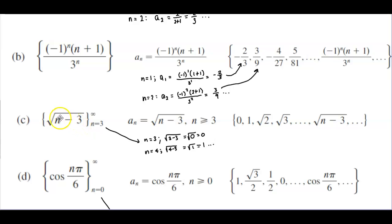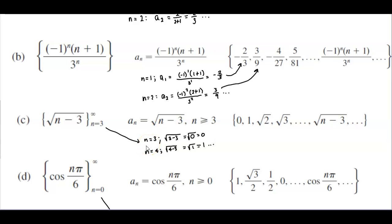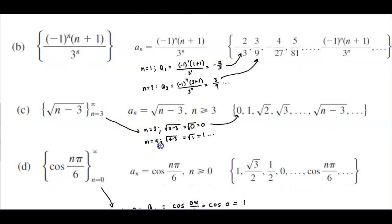Next we have the set of the square root of n minus 3 where the sequence starts at n equals 3 and approaches infinity. Here a subscript n equals the square root of n minus 3, where n must be greater than or equal to 3. The first term is when n equals 3: plugging in 3 gives a value of 0. Plugging in the next value n equals 4 gives 1, which is the second term of the sequence, and so on.